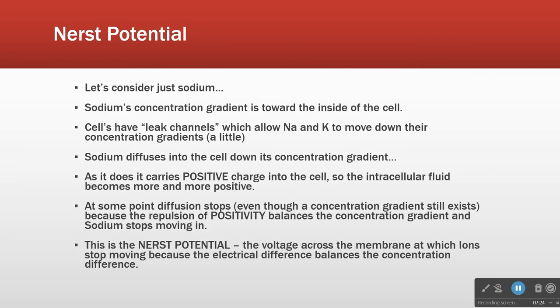So the Nernst potential is the voltage across the membrane. In order to have a voltage, you have to have two spots. When we talk about cells, those two spots are the inside and the outside. We take probes — one goes in, one goes out — and measure the electrical difference between them. The Nernst potential is a specific voltage where diffusion forces are balanced by electrical forces.